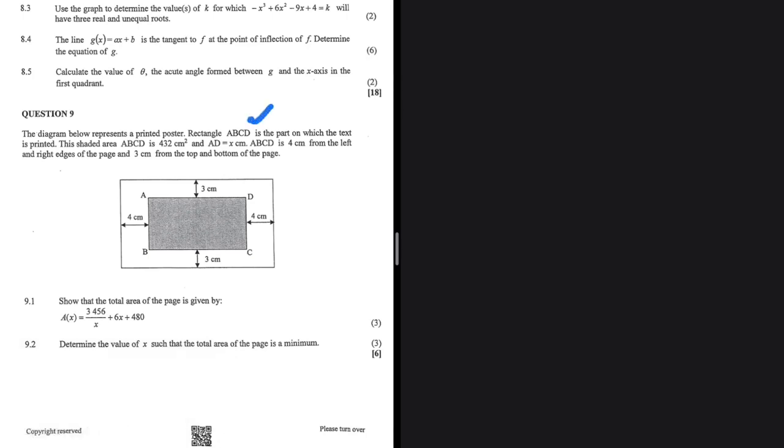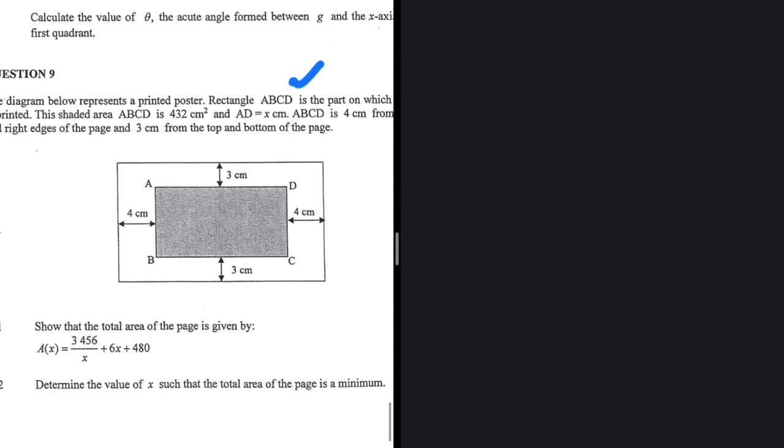Rectangle ABCD is the part on which the text is printed. The shaded area ABCD is 432 cm squared and AD is equals to x cm. So we have AD being equals to x cm.